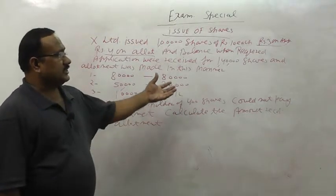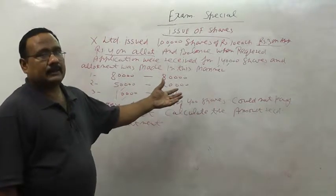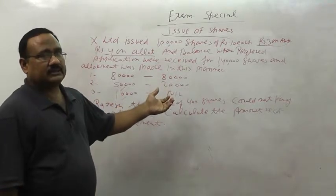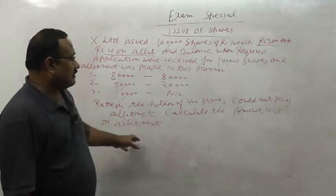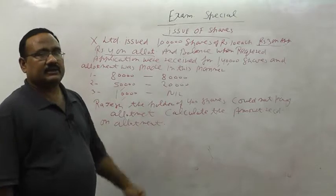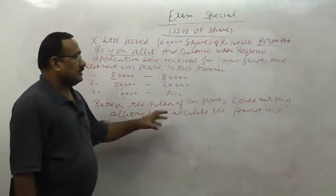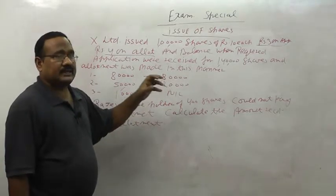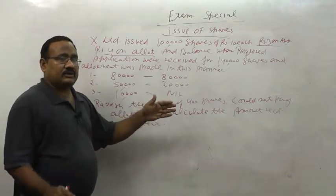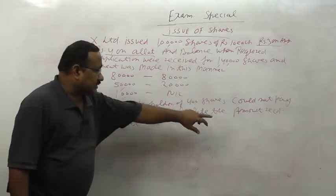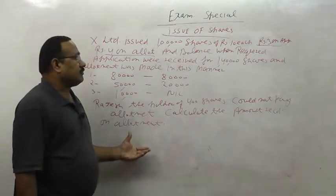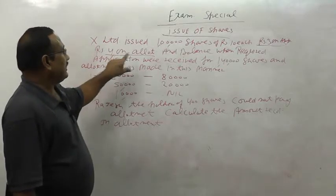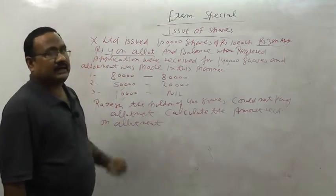These kinds of questions in the exam paper carry around 3 or 4 marks and you have to calculate the amount received on allotment. The question is quite easy. Keep in mind that the question asks for the amount received on allotment. Allotment is rupees 4 and total shares are 1 lakh.